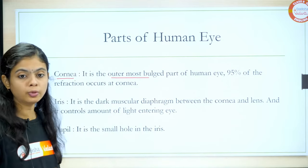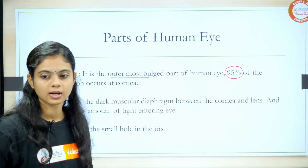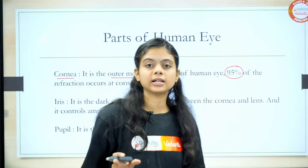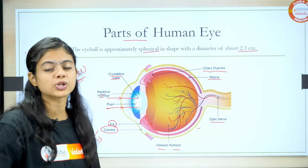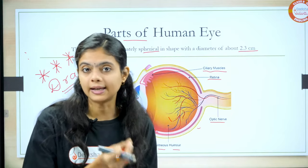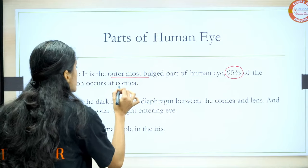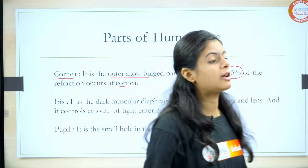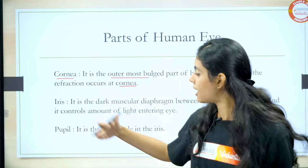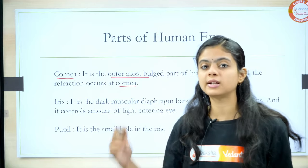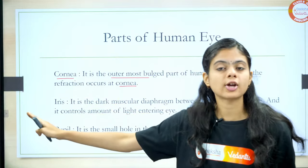Yes — 95%! So when we hear the word lens, we think that the lens produces maximum refraction. But no — maximum 95% of the refraction occurs at the cornea. They may ask you in MCQ questions: where does the maximum refraction occur? They'll give options of cornea, iris, pupil, and eye lens. Majority of students will mark eye lens, but that is wrong. Maximum refraction occurs at the cornea.